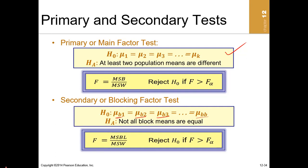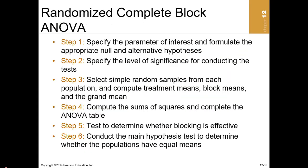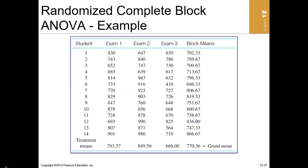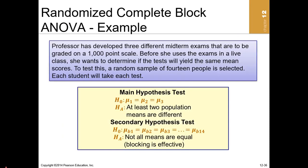The steps in blocking are: first, specify the parameter of interest and state null and alternative hypotheses; second, specify the level of significance; third, select simple random samples from each population and compute treatment and block means; fourth, compute the sum of squares in the ANOVA table; fifth, determine whether blocking is effective; and sixth, conduct the main hypothesis test of whether the populations have equal means.